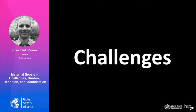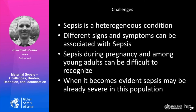There are important challenges to address this burden. Sepsis is a very heterogeneous condition — different signs and symptoms can be associated with it. Sepsis during pregnancy and among young adults can be difficult to recognize. When it becomes evident, sepsis in that population may already be severe and advanced with a reduced chance of survival. So it's very important to develop ways and knowledge and technology to identify sepsis as soon as possible.